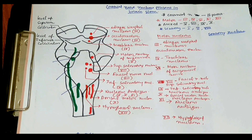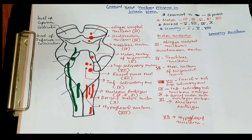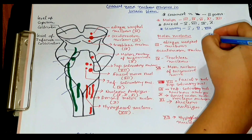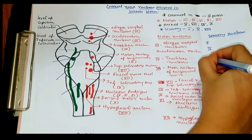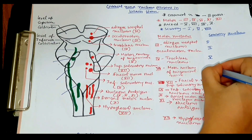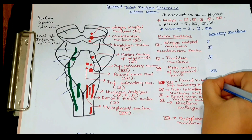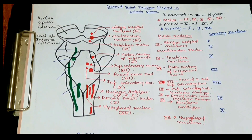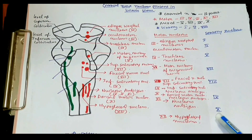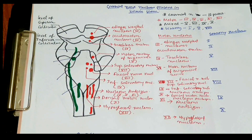Now I will go over the sensory nuclei. The sensory nerves are 1, 2, and 8, but I am going to write sensory nuclei for 1, 2, 5, 7, 8, 9, and 10, since the mixed nerves also have a sensory part. All the green portions on the diagram are sensory nuclei.